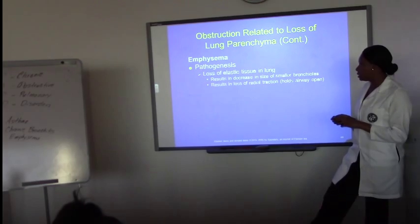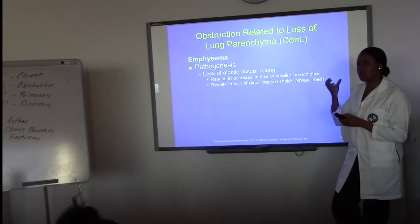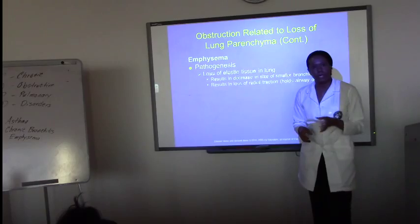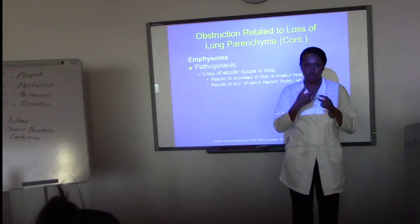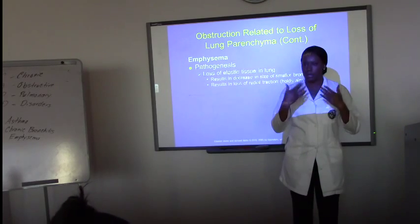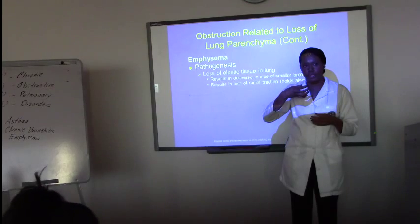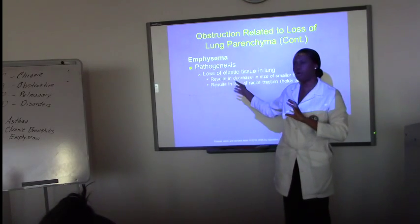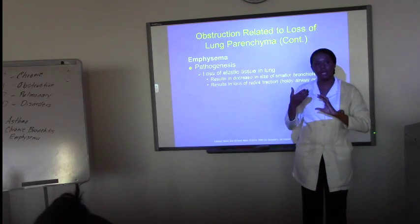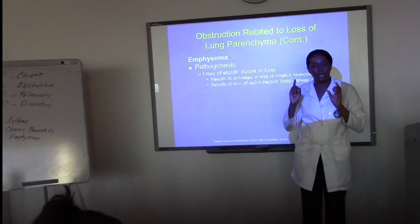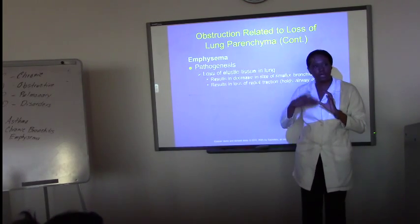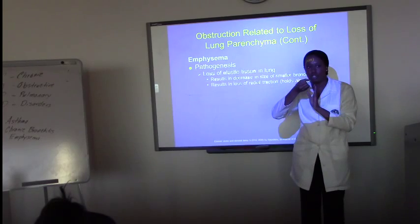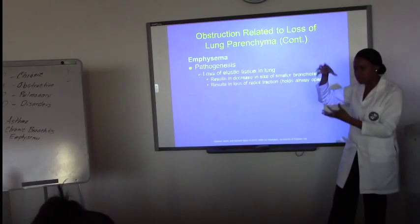They also lose elastic tissue in the lung, which decreases the size of the bronchioles and results in radial traction that normally holds the airway open. The bronchi have little muscles around them so when you inhale and exhale they expand and contract to get air in and out. The problem here is they lose that traction, so the airway stays held open, meaning air just sits there rather than being properly expelled.